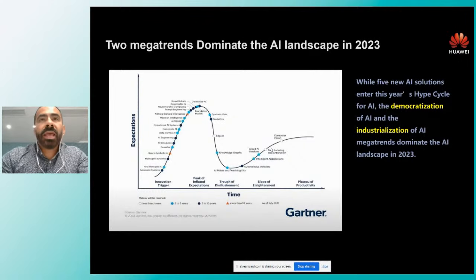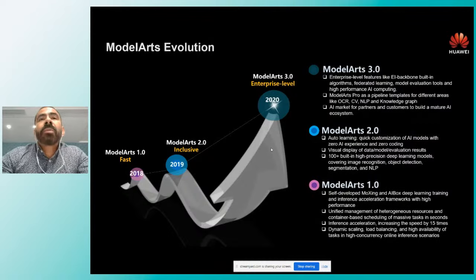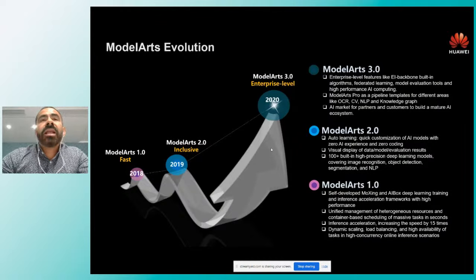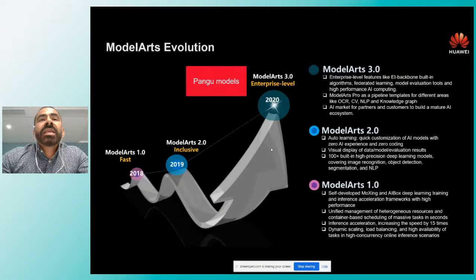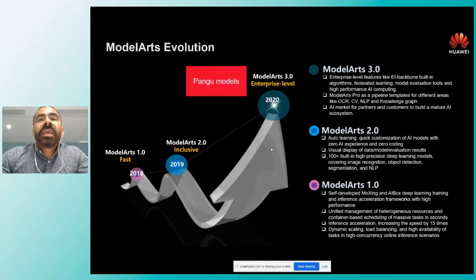Estas son las dos megatendencias que dominan el ámbito y en las cuales nuestra plataforma está basada. La evolución empezó en 2018 con ModelArts 1.0; ahora desde 2020 estamos en ModelArts 3.0, que tiene muchas ventajas desde el punto de vista de mejores prácticas y adopción de tecnologías de inteligencia artificial. Una de las últimas incorporaciones son los modelos Pangu: capacidades o modelos ya pre-entrenados para análisis financiero, predicción de clima y escenarios de minería, con cientos de millones de parámetros —propiedad intelectual de Huawei— ya optimizados para este tipo de escenarios.